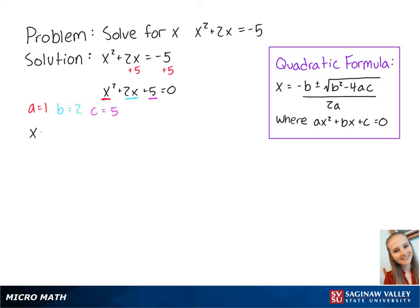So using the quadratic formula, we get x equals negative 2 plus or minus the square root of 2 squared minus 4 times 1 times 5 all over 2 times 1. This equals negative 2 plus or minus the square root of negative 16 all over 2.